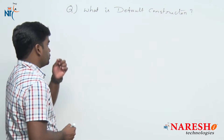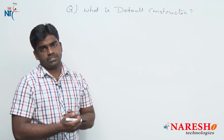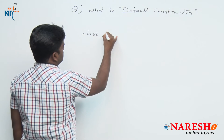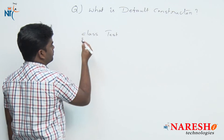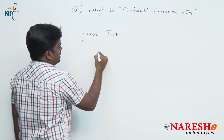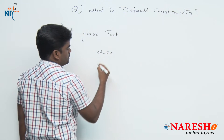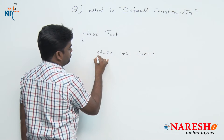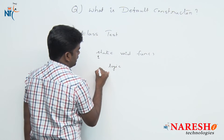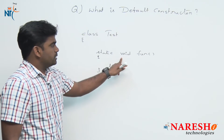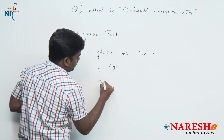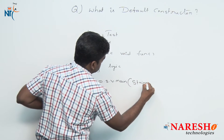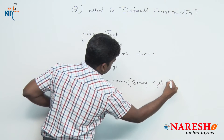First we will discuss about a general method, then we will convert into a special method. We are taking one class, the class name is 'test'. Inside it we are writing one static user method — static void fun — with some logic inside. Along with the user method 'fun', we are writing the main method also: public static void main, String args.